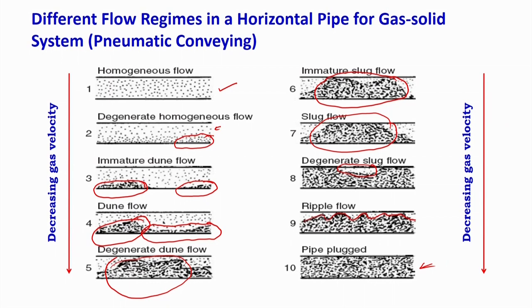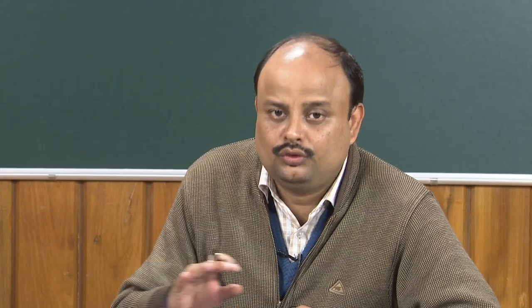By keeping the same solid loading and reducing gas velocity, you pass through all these conditions. Alternatively, fixing gas velocity and increasing solid loading gives the same progression. These are the different flow regimes that occur, which is why operating a pneumatic conveying system is very tough. It is an unstable operation — a small change in velocity can shift the system from a completely moving bed to a complete plug bed with no movement.